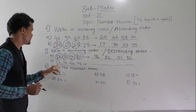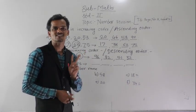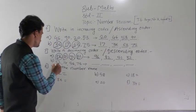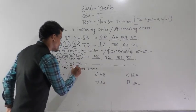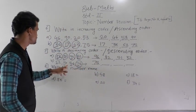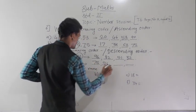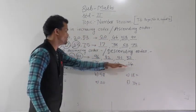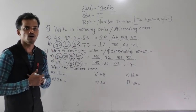Next example: 22, 14, 56, and 75. These numbers are also two digit numbers, so we compare the tens digit: 2, 1, 5, and 7. The greatest tens digit is 7, so 75 is the greatest number. Write 75 first, then 56, then 22, and at last 14. These numbers are arranged in descending order, meaning greatest to smallest order.